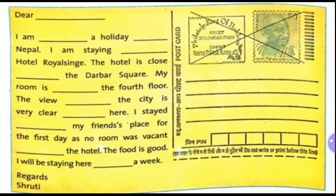Now look at this — this is the postcard. You have to understand, through the use of preposition, how to write a postcard also. You are doing two things simultaneously. While you are filling in the gaps in this letter, you are looking at how a postcard letter is written to any of the relatives, any of the kith and kin.